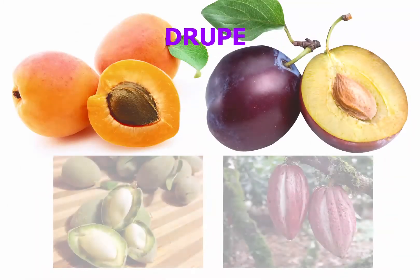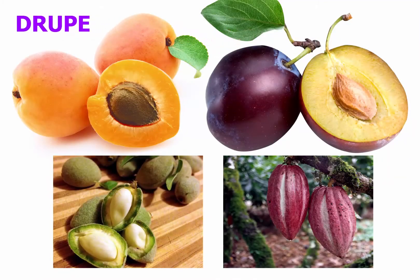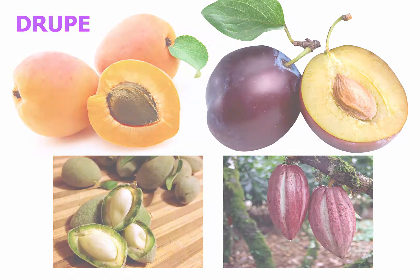Other examples of drupes include the stone fruits like apricots, cherries, peaches, plums, olives, and almonds.